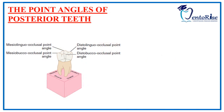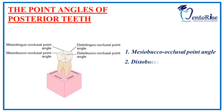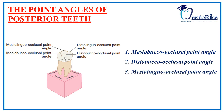So the four point angles of posterior teeth are: mesio-bucco-occlusal point angle, disto-bucco-occlusal point angle, mesio-linguo-occlusal point angle, and the disto-linguo-occlusal point angle.